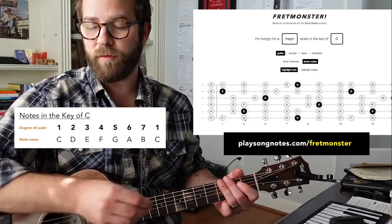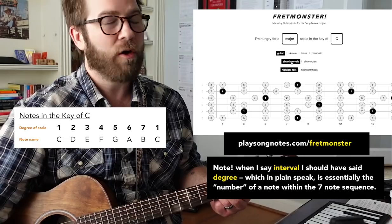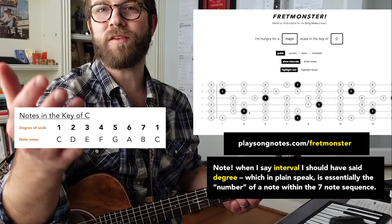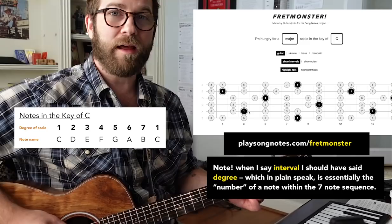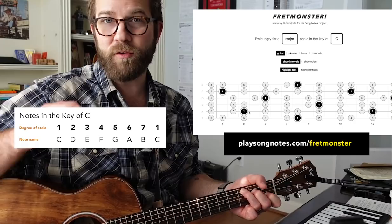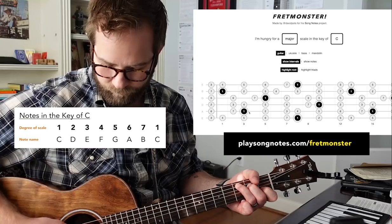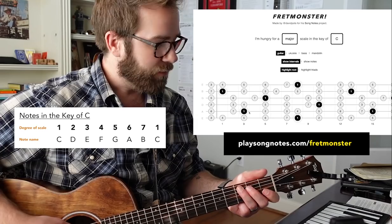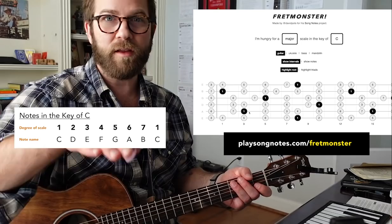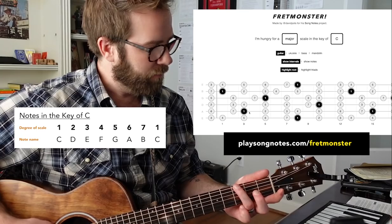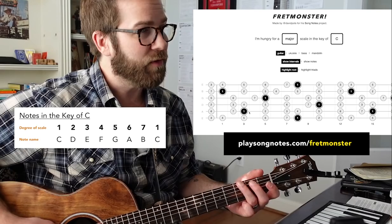Here's a way I'd recommend thinking about this. If you go to FretMonster and show intervals instead of notes, it's going to show you the intervals of that scale instead of the note names. This is more helpful because lots of times walkdowns are going to be between the one — which equals the name of the scale we're playing, so the C chord bass note is the one — and the five. If we go between a one and a five, we count down: under one you go back to seven, six, five. And to go from five back to one: five, six, seven, one.